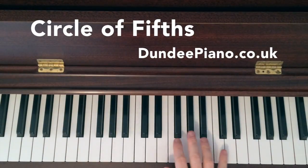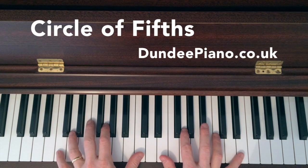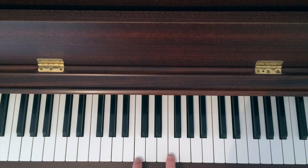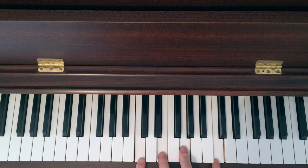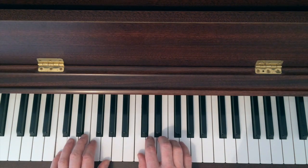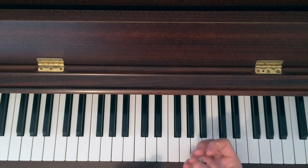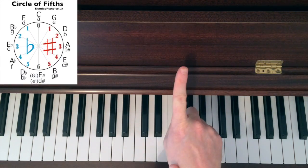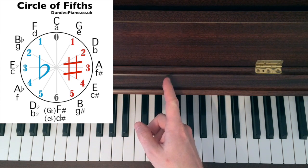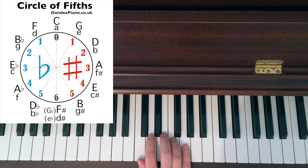Hi there, welcome to Dundee Piano. We're going to have a look at the circle of fifths today. So we're going to start with the scale of C major. I usually start here because it has no sharps or flats. And on the circle of fifths, I'll put the diagram on here, it'll have C at the top. So C has no sharps, no flats. And what we're going to do, because it's called fifths, you'll use five fingers from a scale, for example.